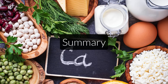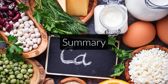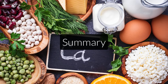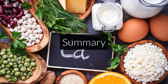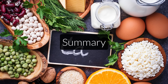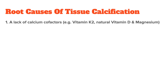All you need to know is that in most cases the root causes of tissue calcification are: first, the lack of calcium cofactors — for example vitamin K2, natural vitamin D, and magnesium — and second, weak adrenals, which leads to a lack of solving agents, primarily sodium and potassium.